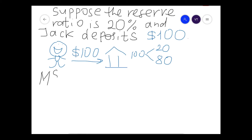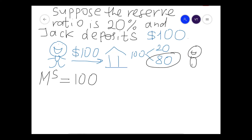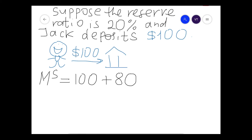When this happens, money supply — denoted by MS — equals cash plus deposits. Jack brought $100 into the bank, but then the bank made a loan to someone else. That person received $80, so money supply is now $100 plus $80.